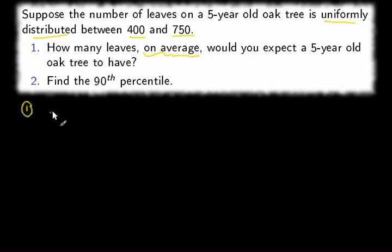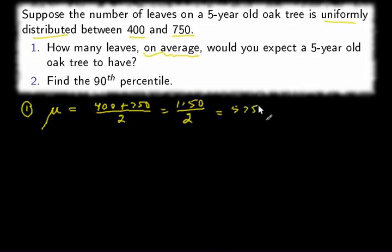And that is also known as the mean or the expected value. The expected value for any uniform distribution is the average of the minimum and the maximum. So we average the minimum and the maximum, and that's 1150 divided by 2. So 575 leaves on average.